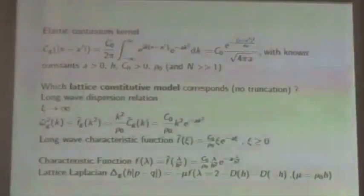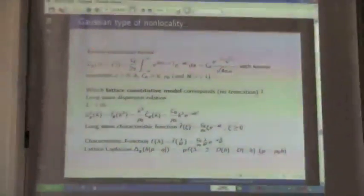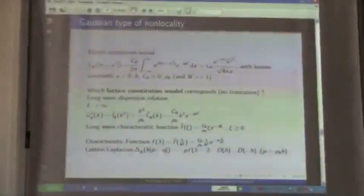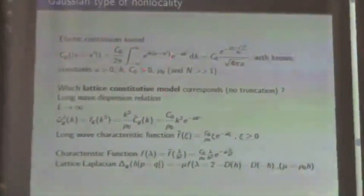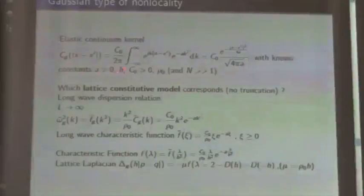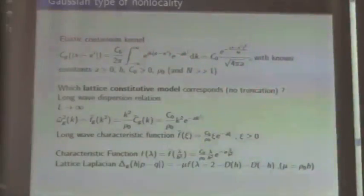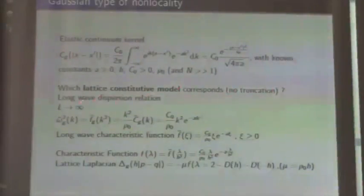Because it might look a bit dry or abstract, let's now demonstrate with an example. Assume you have a Gaussian elastic modulus on a one-dimensional infinitely long chain. We want to know what kind of lattice potential corresponds to this Gaussian elastic modulus, when we assume no truncation — when we assume all B_M are equal to 1, so no constitutive information has been lost in the continuum limit. First step: construct the continuum limit characteristic function.